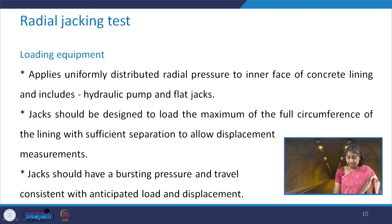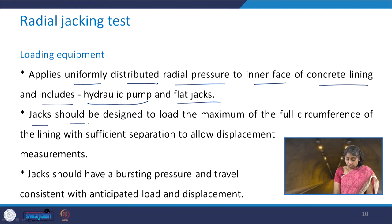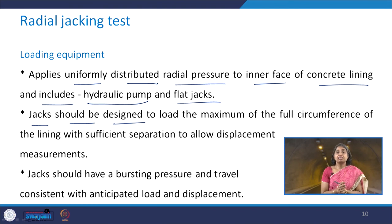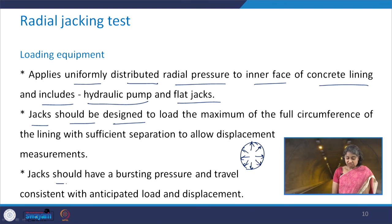The loading equipment applies uniformly distributed radial pressure to the inner face of the concrete lining, and it includes the hydraulic pump and the flat jacks. These jacks should be designed to load the maximum of the full circumference of the lining with sufficient separation to allow measurement of displacements. The jacks should have a bursting pressure and travel consistent with the anticipated load and displacement.